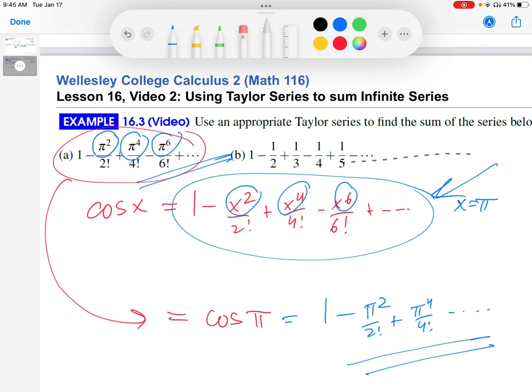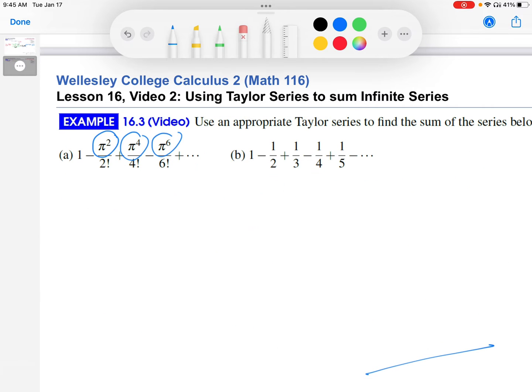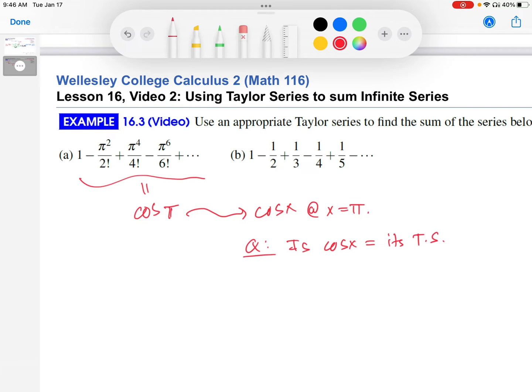Okay, so to clean things up, our basic claim, now that we've compared the infinite series with the McLaurin series for cosine of x, our basic claim is that this thing equals cosine of pi. So that would be the sum. Now, very important, we have to also make sure that we are within the interval of convergence. In other words, this is cosine of x at x equals pi. So question, is cosine of x equal to its Taylor series or McLaurin series at x equals pi? And the answer has to do with the interval of convergence for that Taylor or McLaurin series.